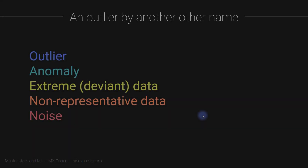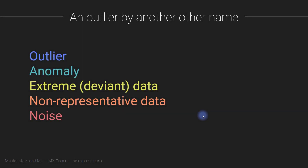It happens sometimes that a single data point can completely screw up the entire statistical modeling procedure. When you have really unusual data points, those are called outliers. They're also sometimes called anomalies or extreme data, non-representative data, or sometimes noise.